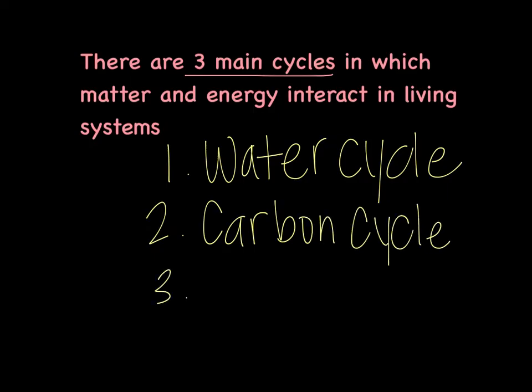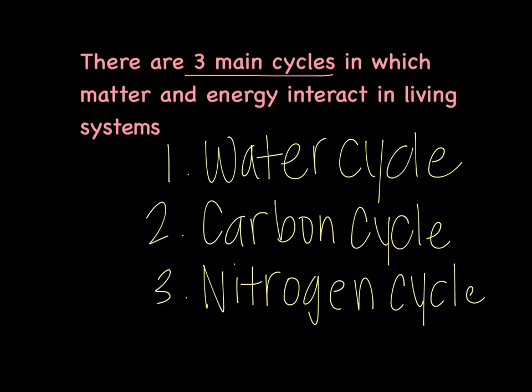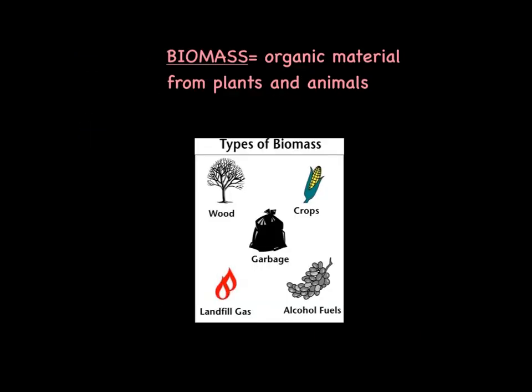These are the three main cycles that we're going to talk about where matter and energy are constantly interacting in a living system. Living systems is just an ecosystem, basically anything involving interactions between living things. Make sure you write down those three cycles.